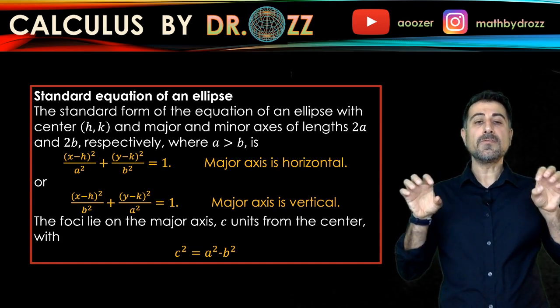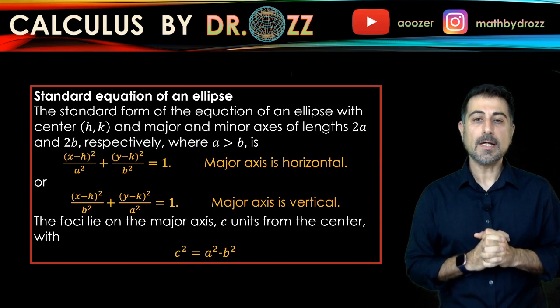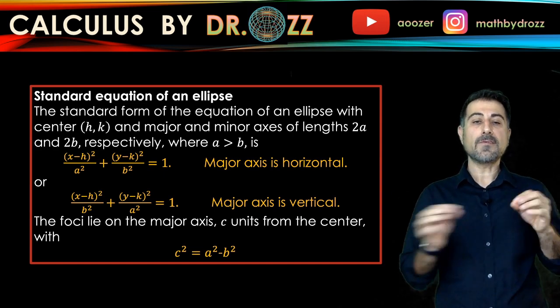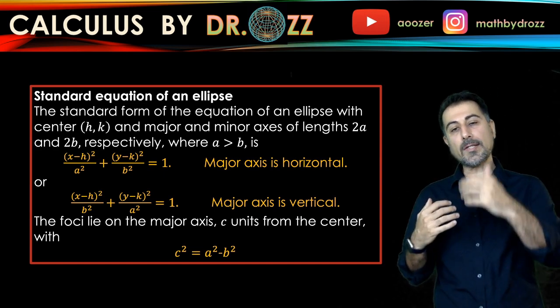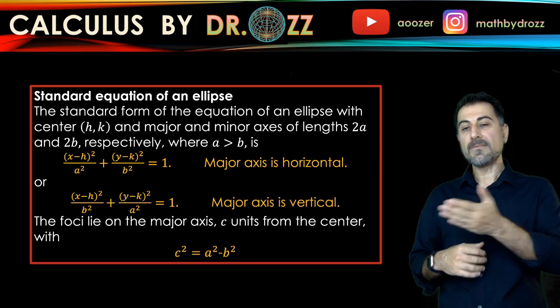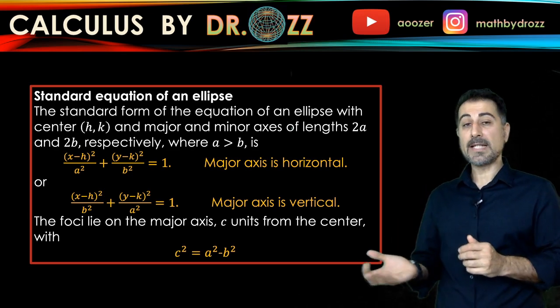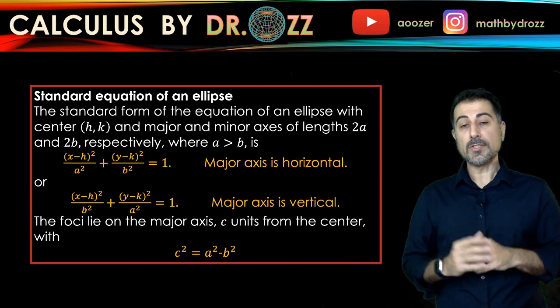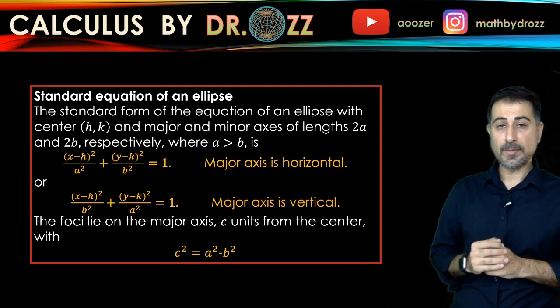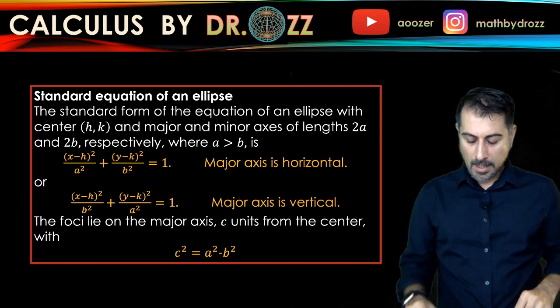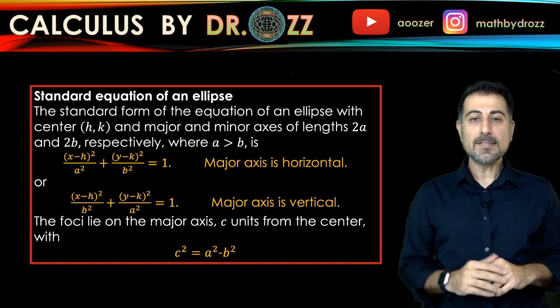And also, we have two different foci for an ellipse, and they are C units far from the center. And C is connected through A and B by the formula C squared equals A squared minus B squared. So we're going to also use this formula along the way. So please keep this in a safe, and we're going to refer back to that in the video.